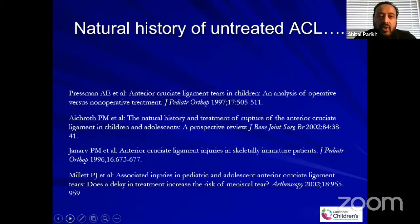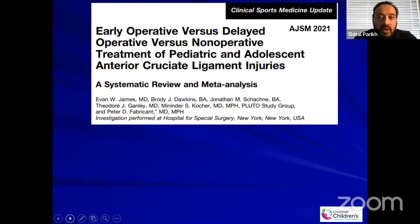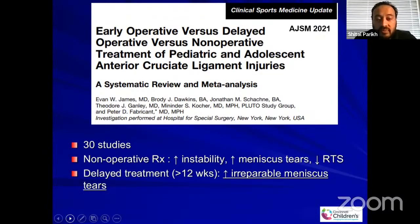Is that a good option? If you look at the natural history of untreated ACL, there are several publications including recent systematic reviews, and the natural history is not good. A 2021 systematic review and meta-analysis of early versus delayed versus non-operative treatment compiled 30 studies. Non-operative treatment increased instability, increased meniscus tears, and decreased return to sports. Delayed treatment, even delayed by more than 12 weeks, led to increased rates of irreparable meniscus tears.